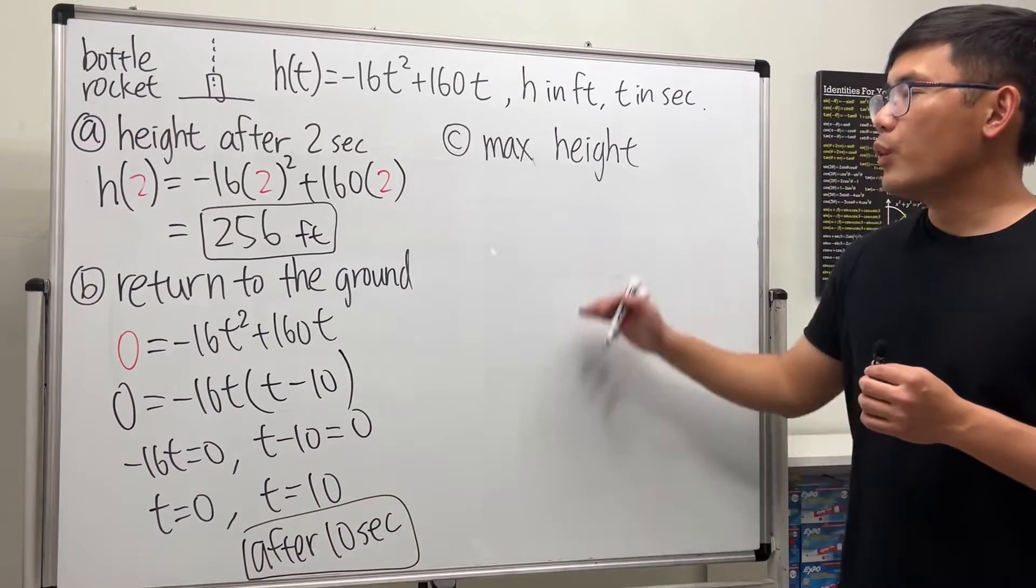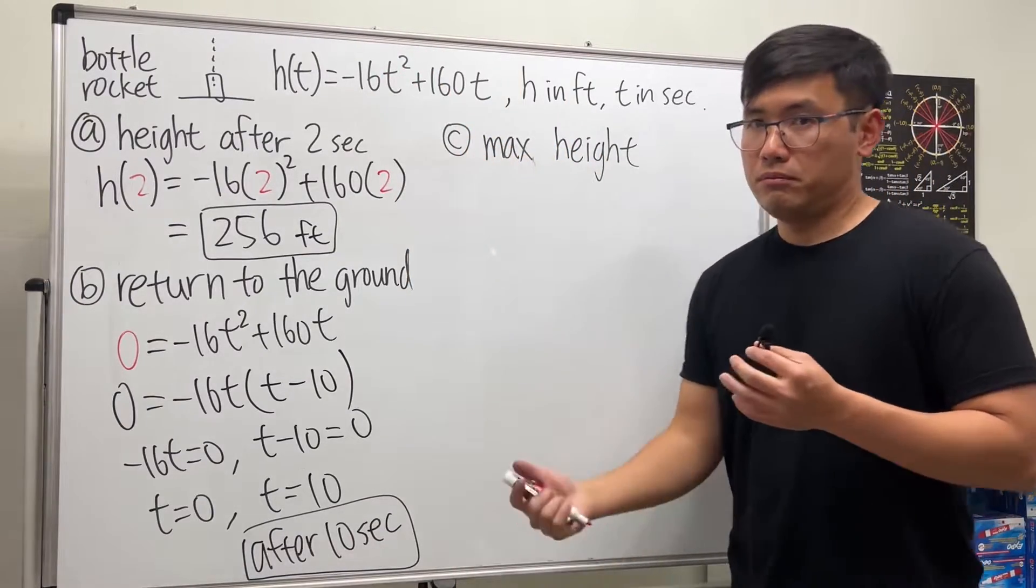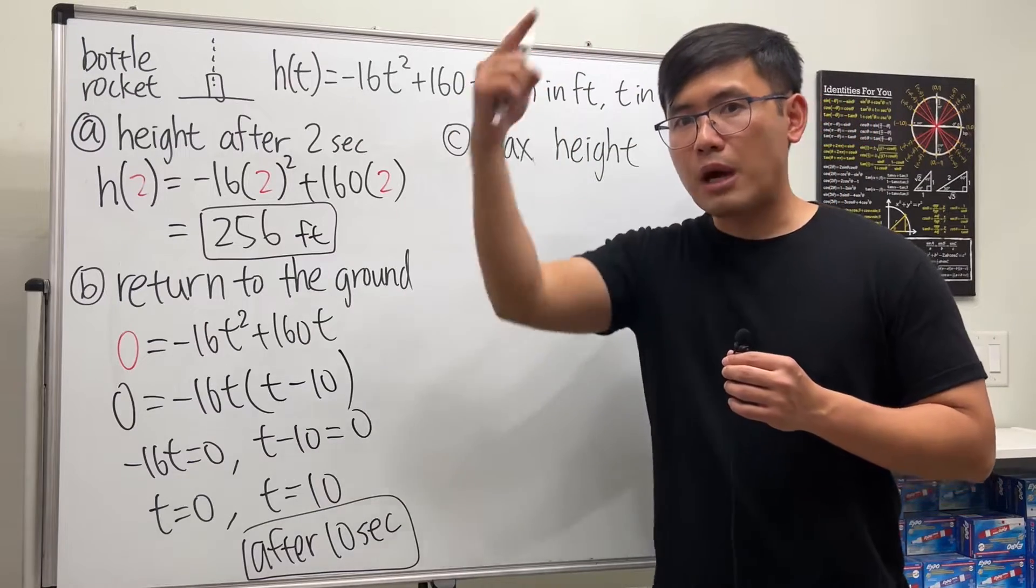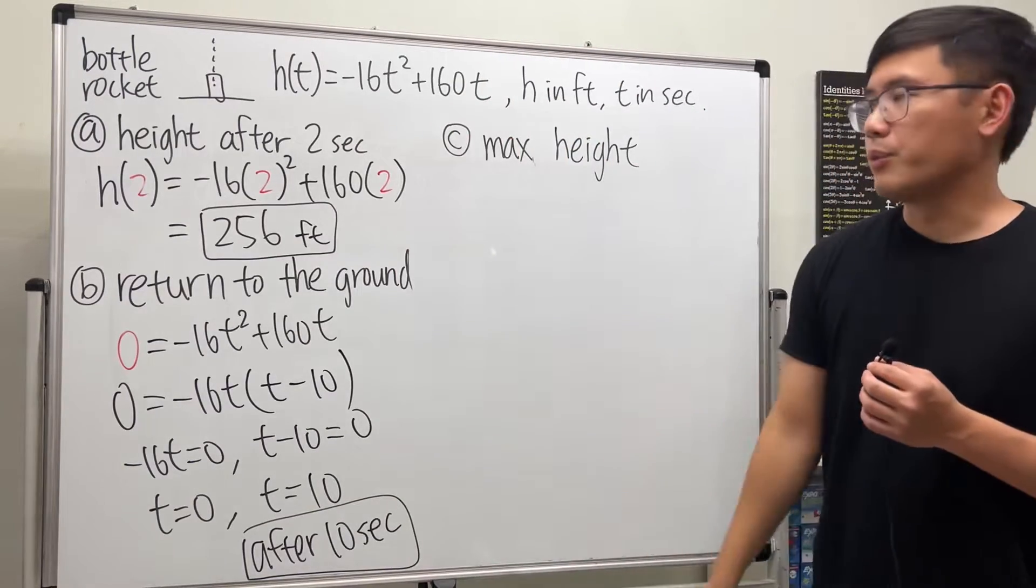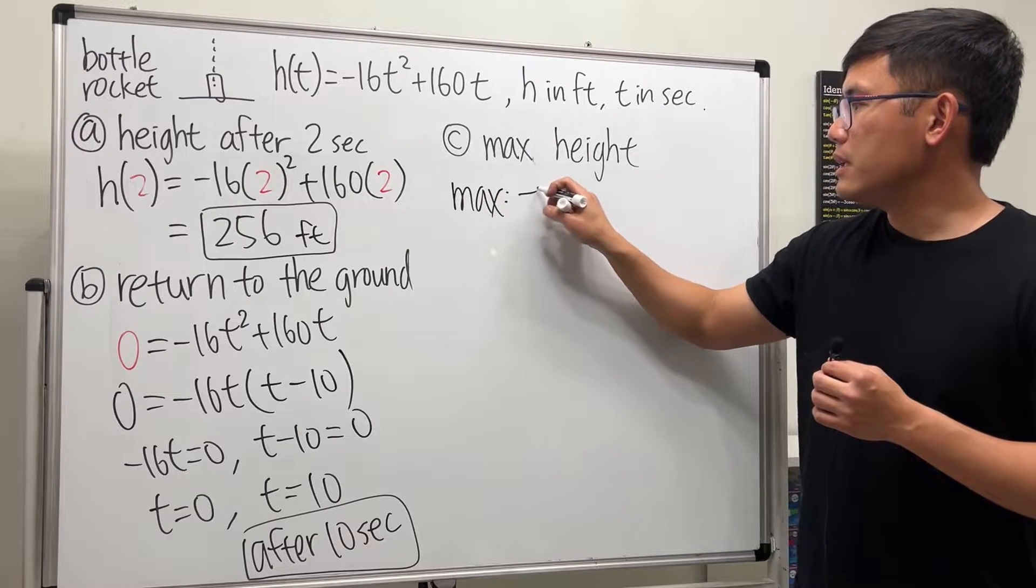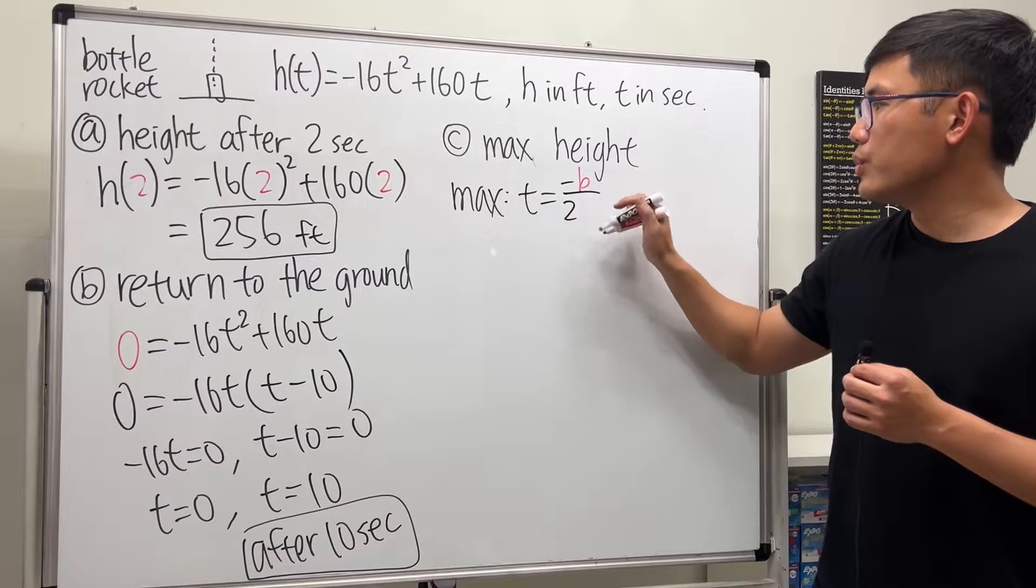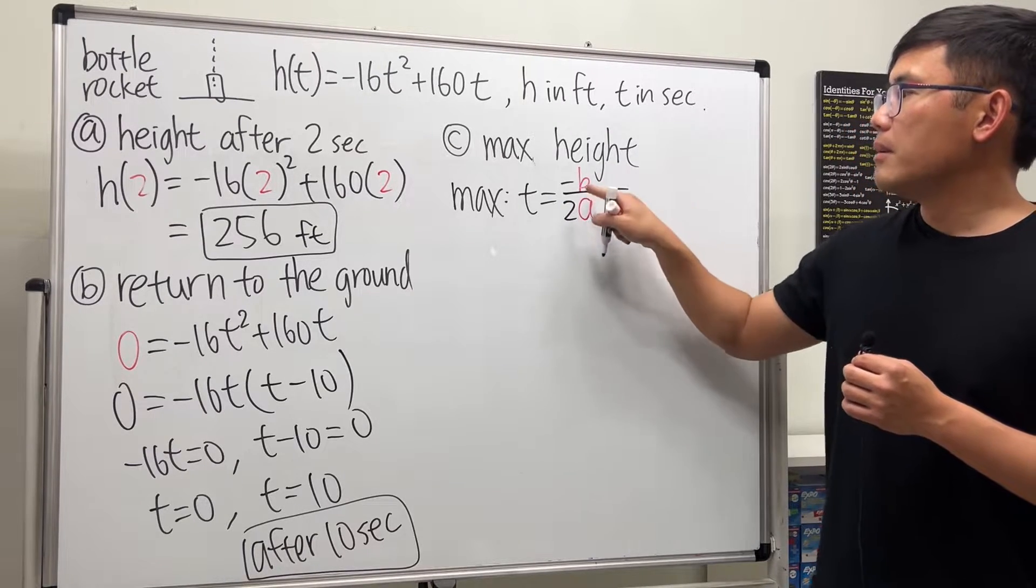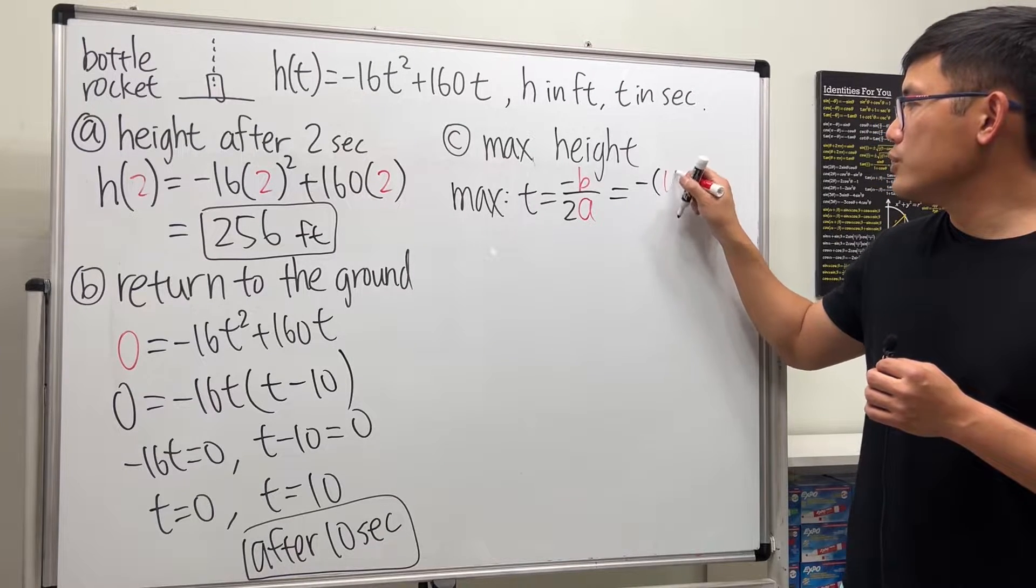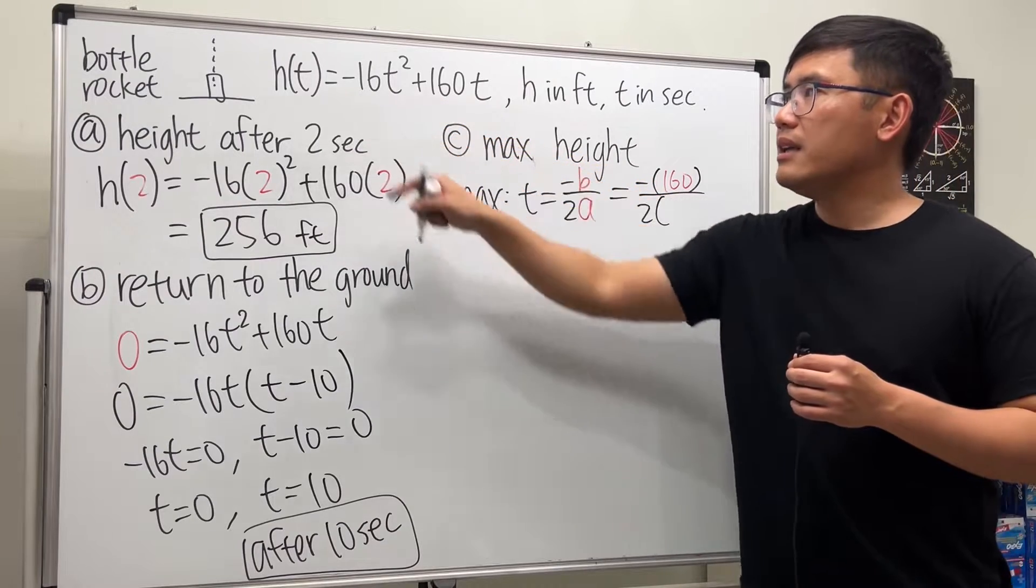For the third part, we are going to find the maximum height that the rocket can reach. This is an upside-down parabola, so we have the vertex formula. The maximum is at t = -b/(2a). b is 160, so we have -160 over 2 times a, where a is -16.